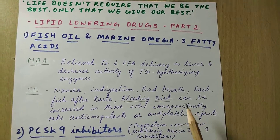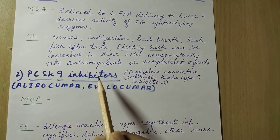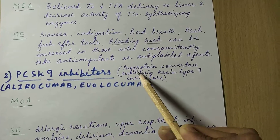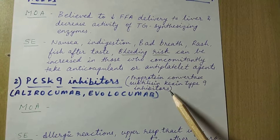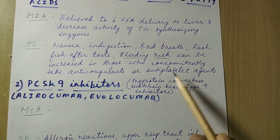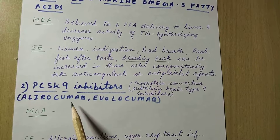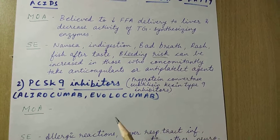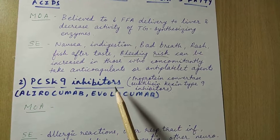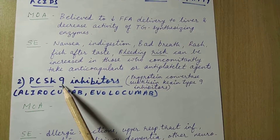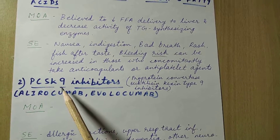The second drug is PCSK9 inhibitors. The full form is proprotein convertase subtilisin kexin type 9 inhibitors — you don't need to remember the full name. Examples are alirocumab and evolocumab. PCSK9 is an enzyme produced by the liver.